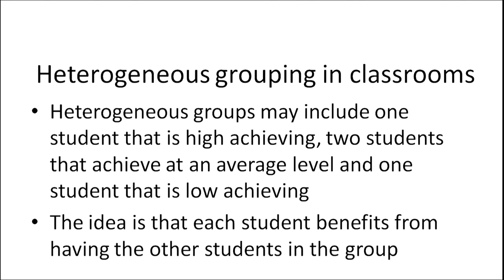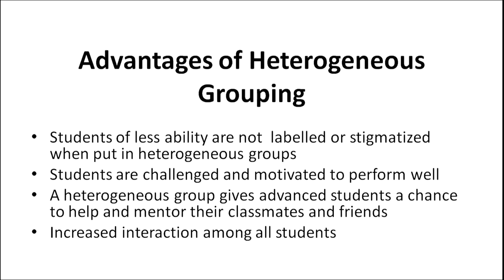The advantages of heterogeneous grouping include: a heterogeneous group may include one high-achieving student, two average-achieving students, and one low-achieving student, so each student benefits from having the others. Students of lesser ability are not labeled or stigmatized — when you make a homogeneous group of low-ability students, the whole class knows these are low-performing students, but putting them in heterogeneous groups helps overcome this. Students are also challenged and motivated to perform well.